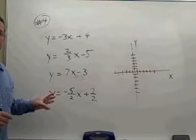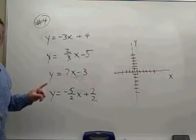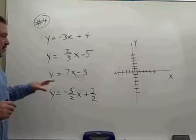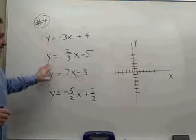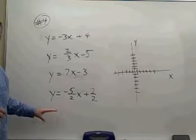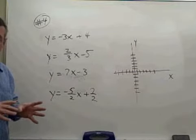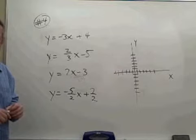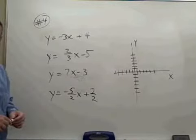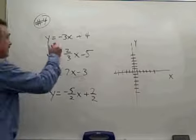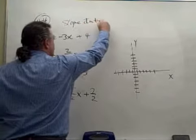Here in problem four, we were to identify the slope and the y-intercept of each line related to each of these equations. We can do that from the equation if it is in slope-intercept form, and all four of these equations have been written in slope-intercept form.